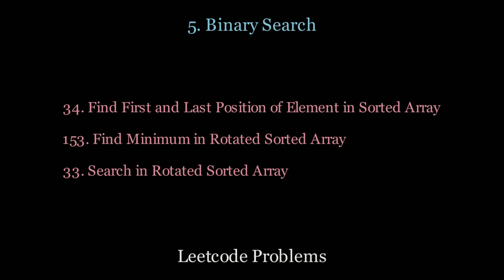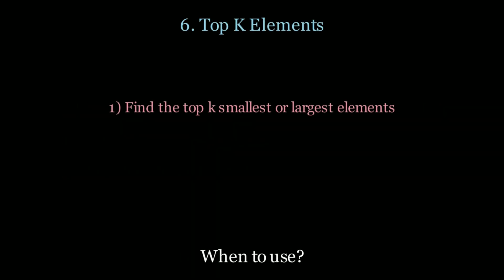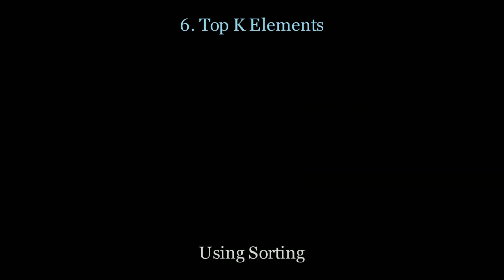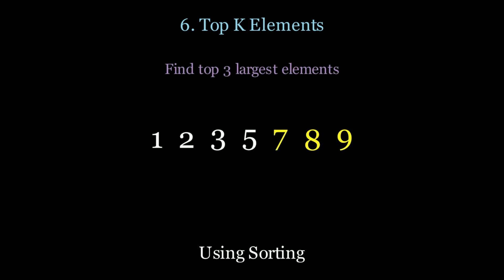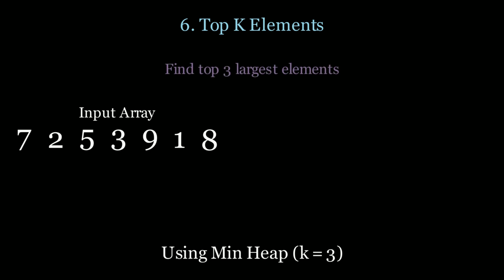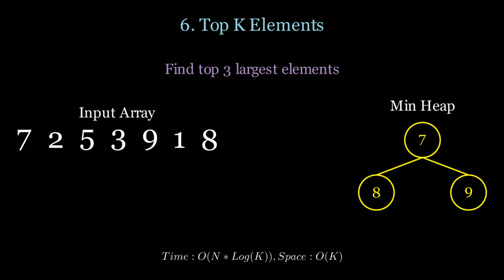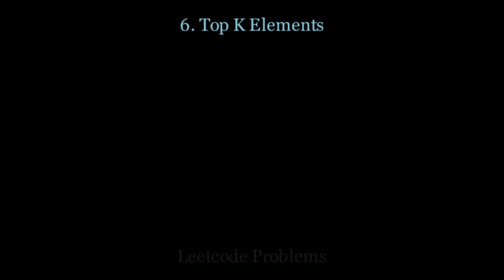For more practice, look at the following LeetCode questions. Next up we have top k elements. Use this pattern when you want to find the top k smallest or largest elements, the kth smallest or largest element, or the k most frequent elements. Without this pattern we'd sort — O(n log n). Using a min heap, we initialize the first k elements into the heap, then for every element greater than the heap's top, we pop and insert the new element. This keeps track of the top k elements. Since popping from a heap is O(log k), the total time complexity is O(n log k), which is better than O(n log n). For more practice, look at the following LeetCode questions.